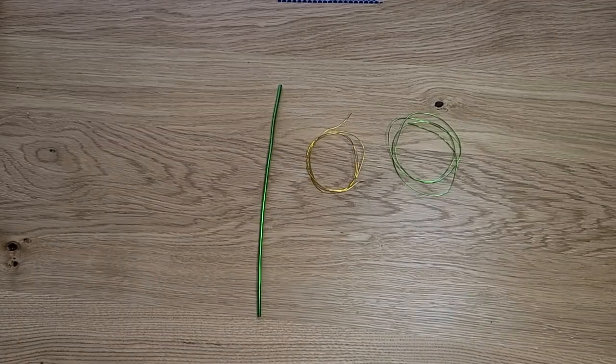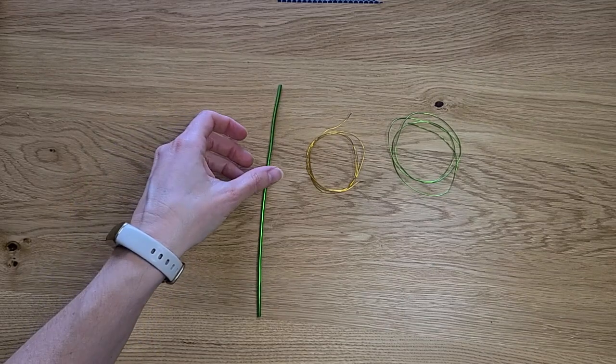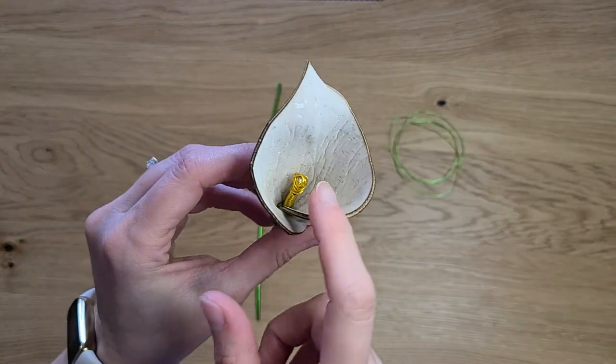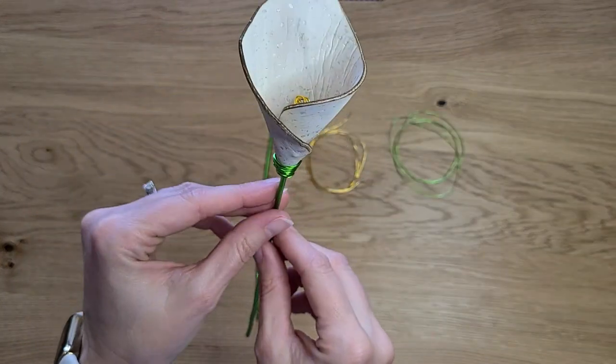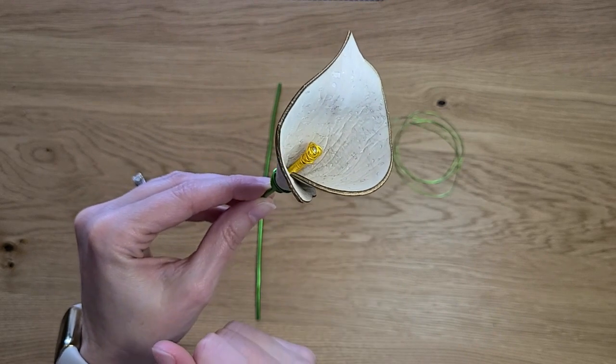Our next step is going to be to create the stem and the stamen. Calla lilies have this pretty little yellow stamen that comes up through the middle of the flower. We're going to create that look with wire.